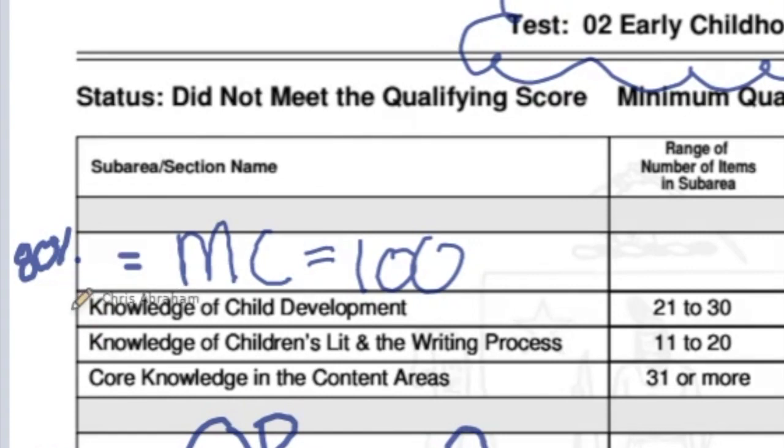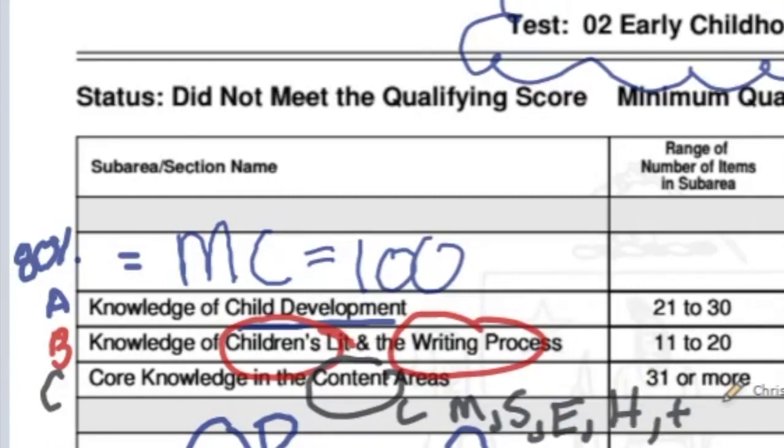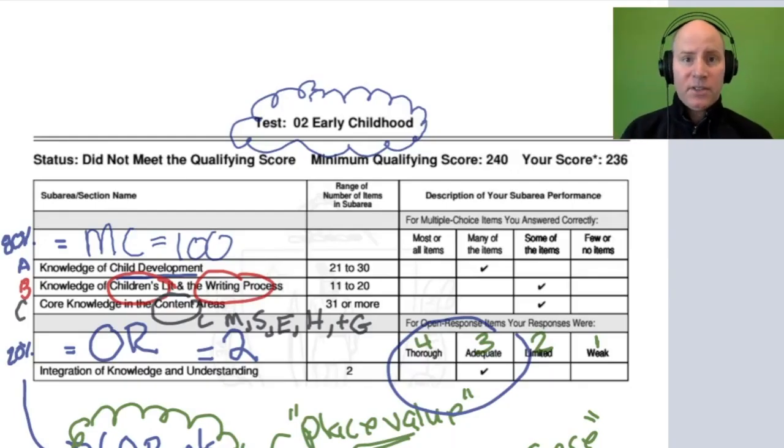The multiple choice is broken into three major sections: an early childhood development section, a children's literature and emergent writing section, and a content section. And that content involves math, science, English, history, and geography questions. There's a ton of stuff on this test that's being covered for the multiple choice. We've got a childhood development section, children's literature section, an emergent writers section, a series of questions on math, science, English, history, geography—lots of different areas here.